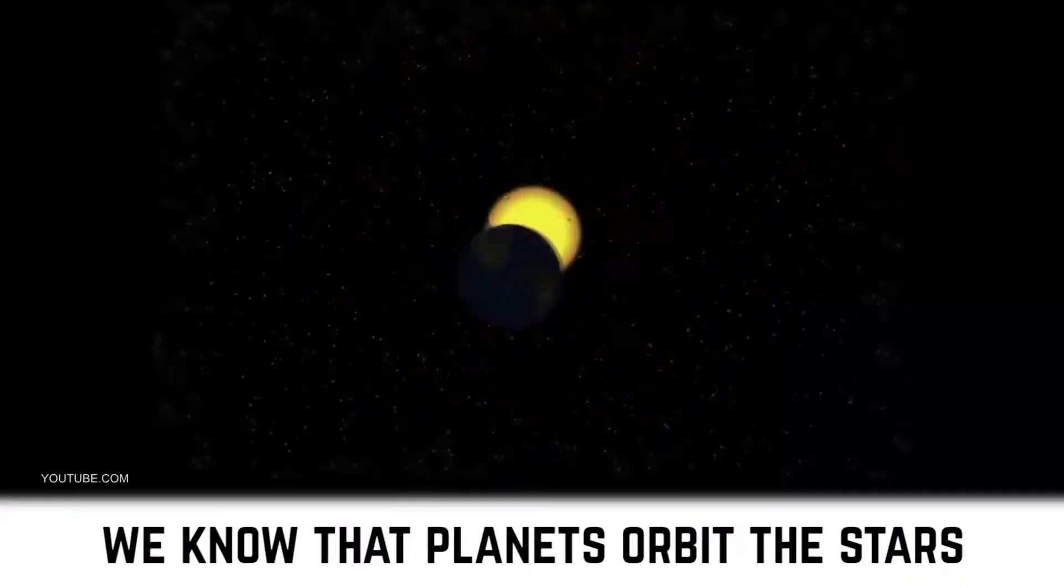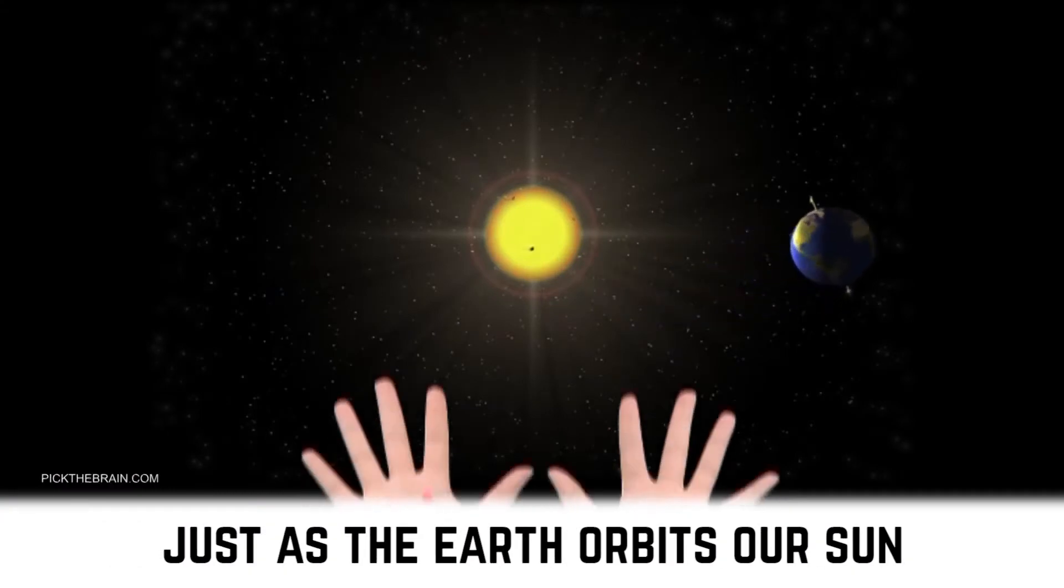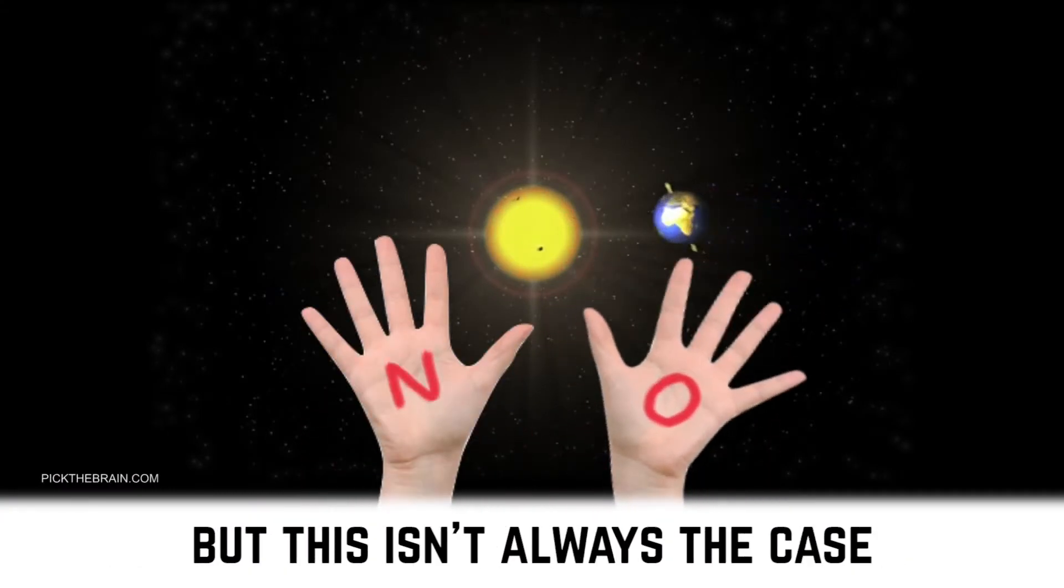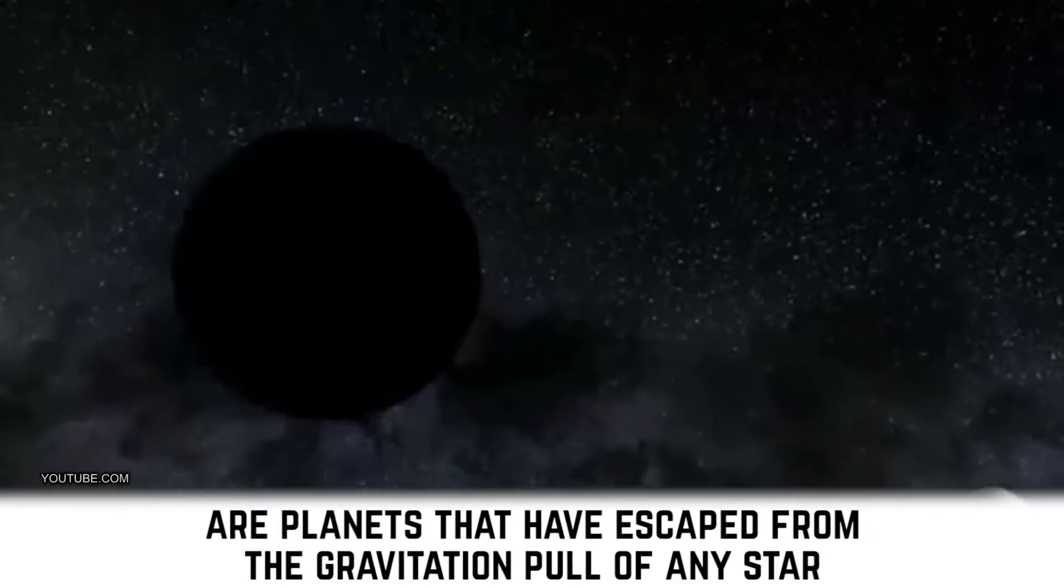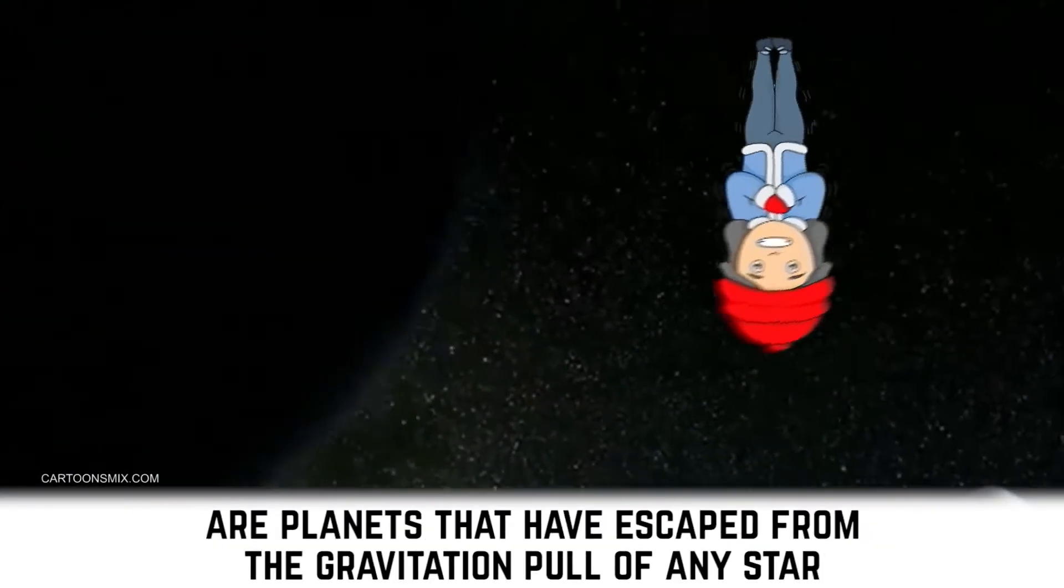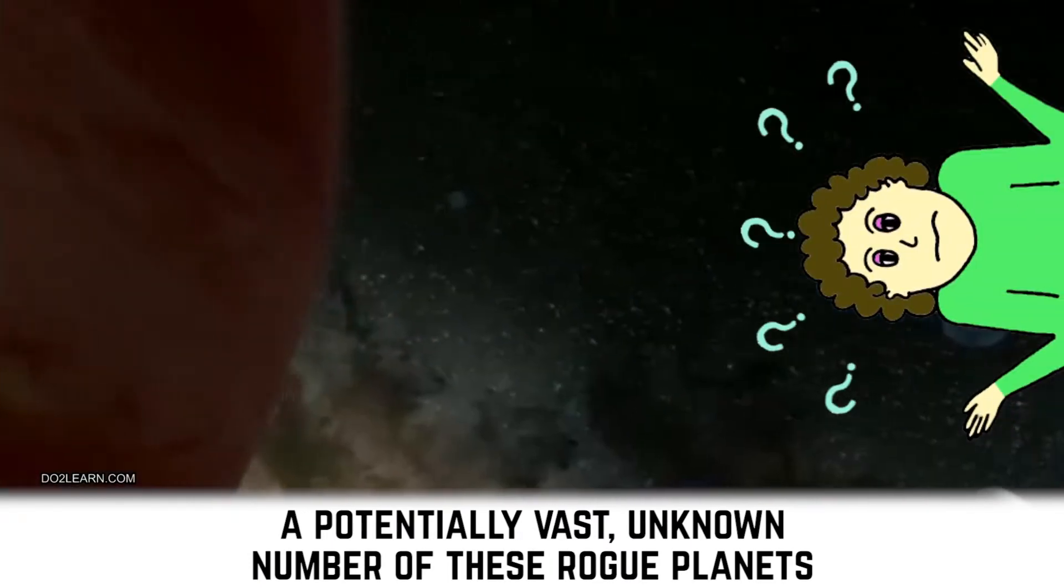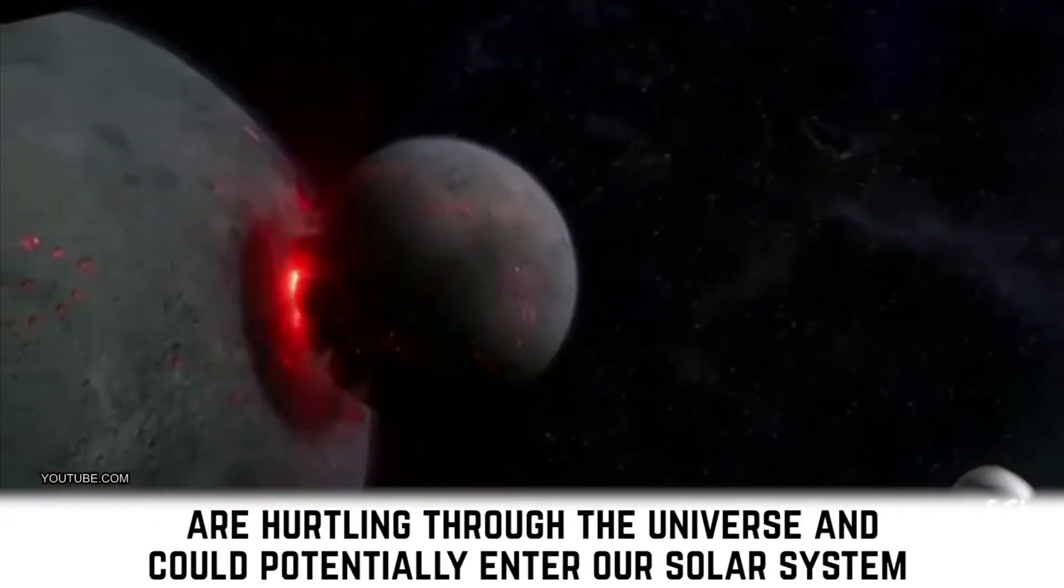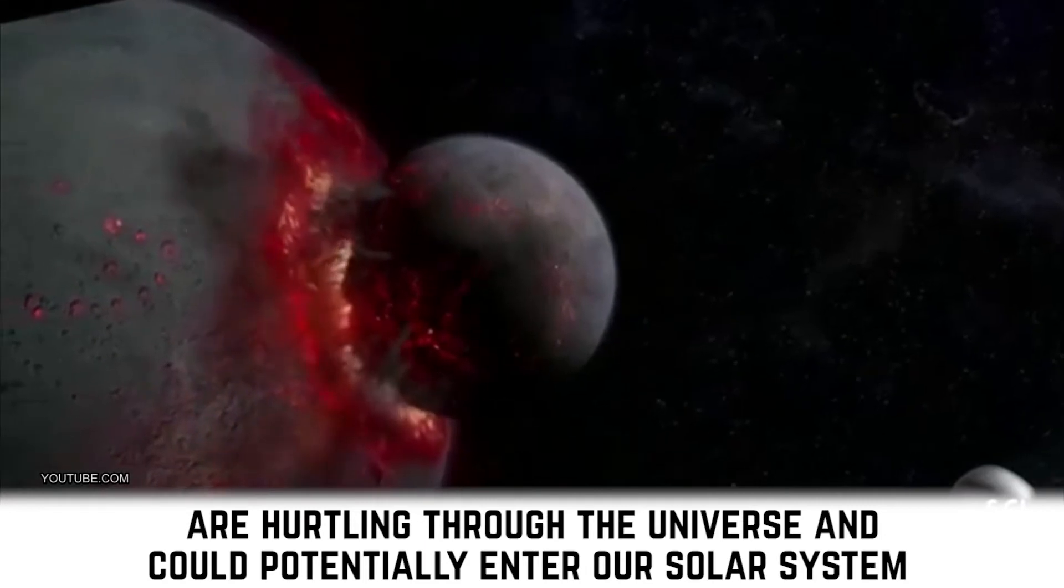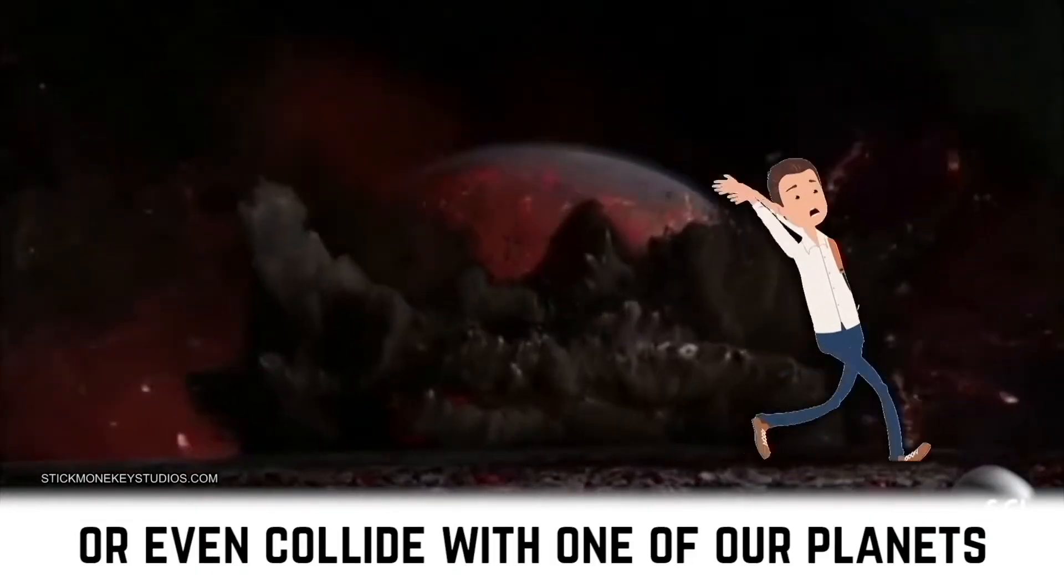We know that planets orbit the stars just as the Earth orbits our sun, but this isn't always the case. Lurking in the frozen reaches of deep space are planets that have escaped from the gravitational pull of any star. A potentially vast unknown number of these rogue planets are hurtling through the universe and could potentially enter our solar system or even collide with one of our planets.